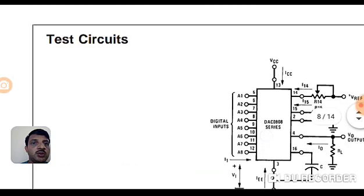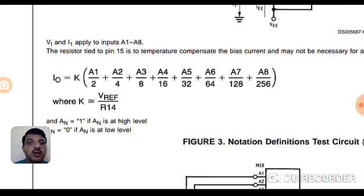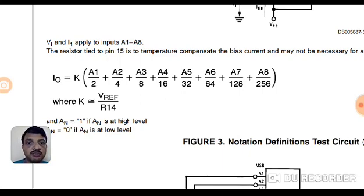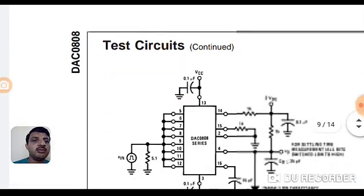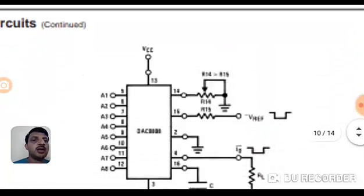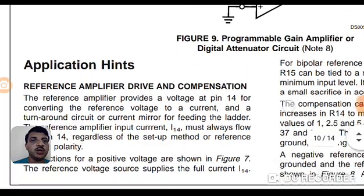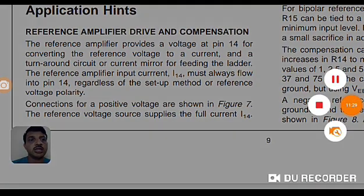From the test circuit and formula in the data sheet: I0 = K × (A1/2 + A2/4 + ...) where K = Vref/R14 — that is the I-reference value. So I0 is an amplified version of I-reference, which is then converted to voltage using an inverting amplifier. Generally, for digital input 0x00 the output is 0 volts, and for 0xFF the output is 5 volts. Many application circuits are also given in the data sheet user manual.